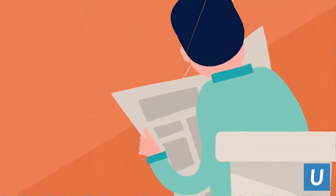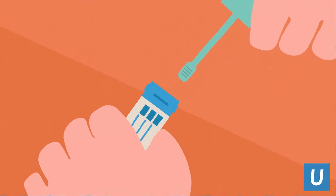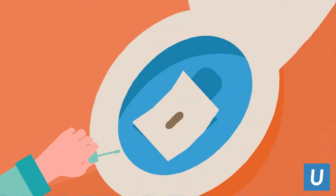Twist the green cap on the sampling bottle to open the bottle. Collect your stool sample before the paper sinks by scraping the surface of the stool sample with the wand attached to the green cap.